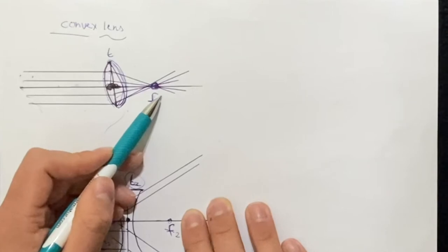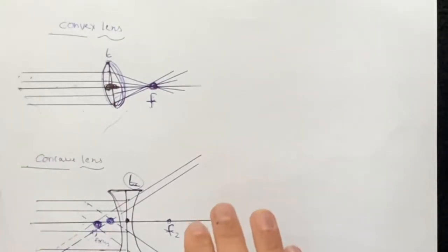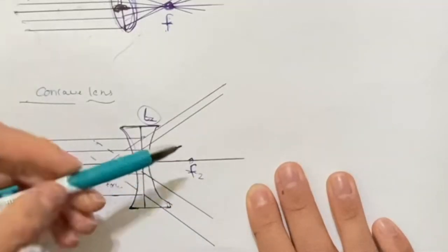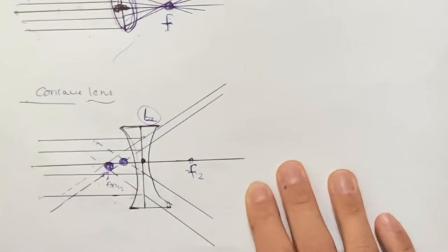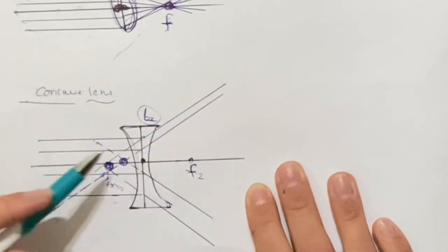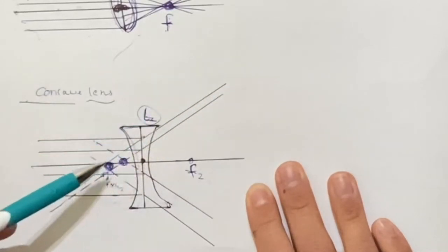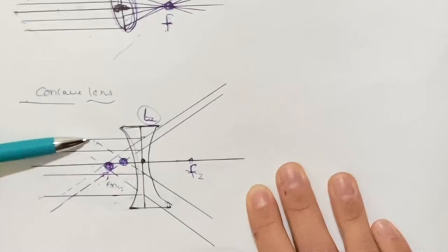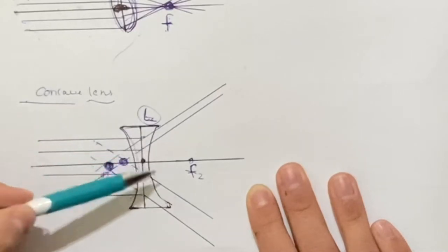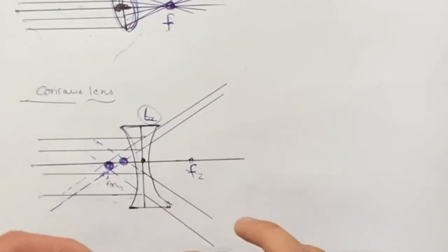When parallel rays of light pass through a convex lens, the refracted rays converge at the focal point, so this image will be formed as magnified and can be used as a lens magnifier. In a concave lens, which is thinner at the middle and curves inside, the rays of light spread out — this is called diverging. When parallel rays pass through a concave lens, the refracted rays diverge and appear to come from one point — the principal focus — so the image formed will be diminished and it will be a negative lens.